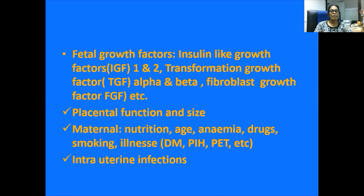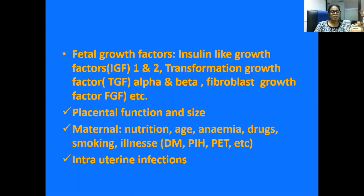Maternal factors include maternal nutrition, age, and anemia. If the mother is malnourished, that will adversely affect the baby. At the extremes of age, a very young or very old mother may produce a smaller baby. Anemia is important because hemoglobin carries oxygen from the mother's lungs to the placenta, so if the mother is anemic, the baby is at risk of hypoxia. Drugs, smoking, and illnesses also influence fetal growth. Maternal infections — particularly the TORCH infections — will affect the baby's growth.